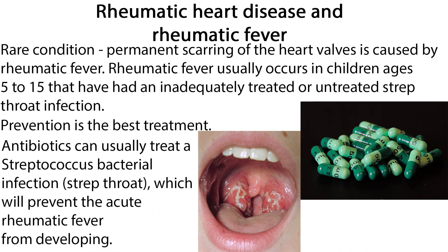Rheumatic heart disease is a rare condition in which permanent scarring of the heart valves is caused by rheumatic fever. It usually occurs in children ages 5 to 15 who have had an inadequately treated or untreated strep throat infection. Prevention is the best treatment. Antibiotics can usually treat a streptococcus bacterial infection, or strep throat, which will prevent acute rheumatic fever from developing. Children that develop rheumatic fever are often given ongoing antibiotic treatments to prevent subsequent inflammation and lower the risk of heart damage.